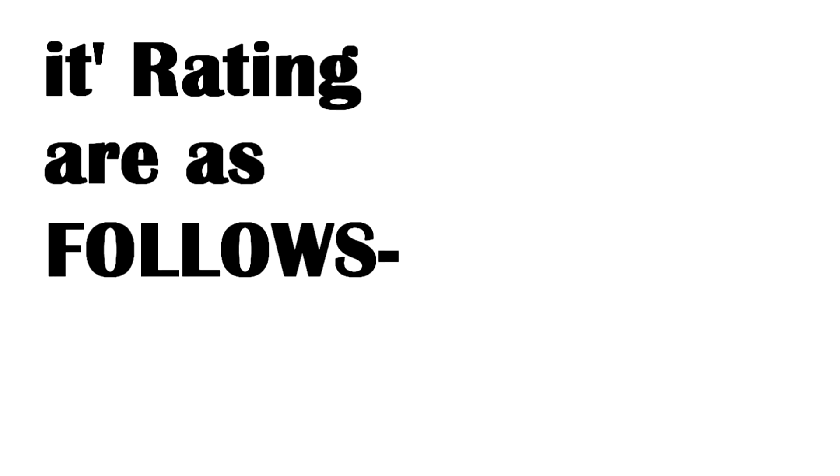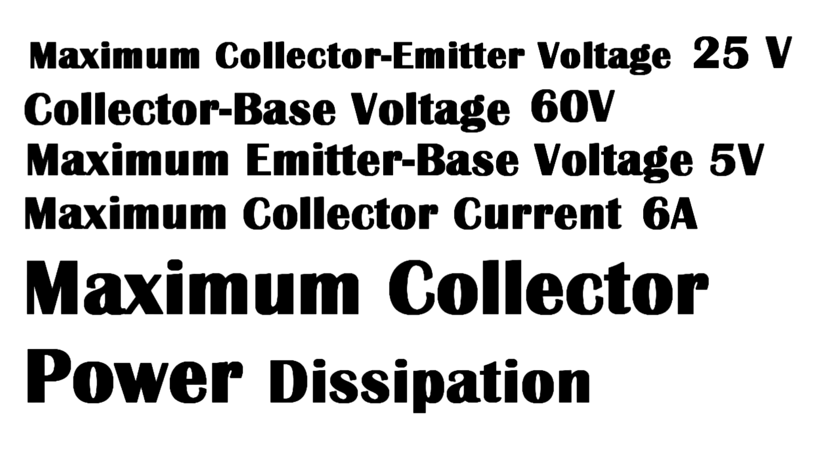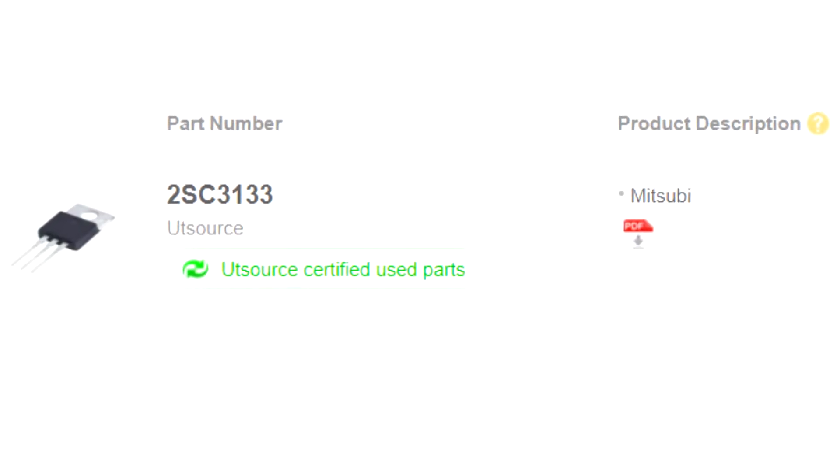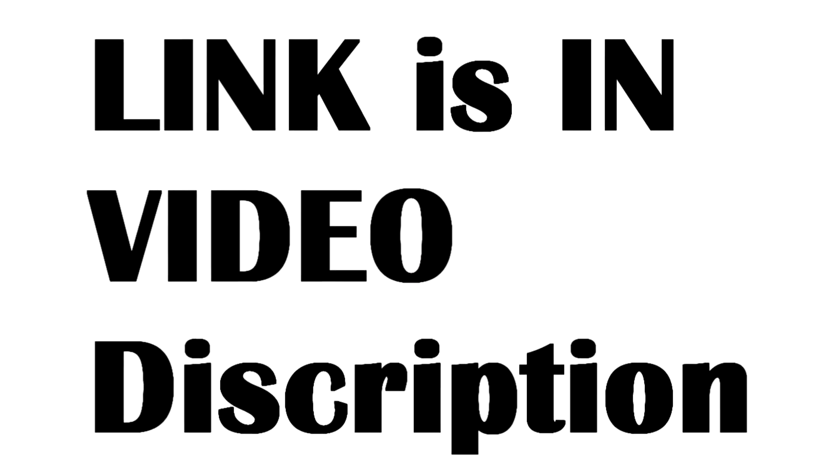Its ratings are as follows: Maximum collector to emitter voltage 25V, collector base voltage 60V, maximum emitter base voltage 5V, maximum collector current 6A, maximum collector power dissipation 20W. Now where you can buy this from? You can buy this from utsource.net. Link is in the video description.